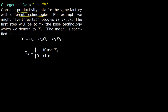The first step is to determine which of these three technologies is more effective, or how they differ from each other, by fixing the base technology. You fix T1 as the base and write the model with coefficients alpha 1 for T1, alpha 2 for T2, and alpha 3 for T3. You then add two dummy variables D2 and D3: D2 equals 1 if you use technology 2, 0 otherwise, and D3 equals 1 if you use technology 3, 0 otherwise.